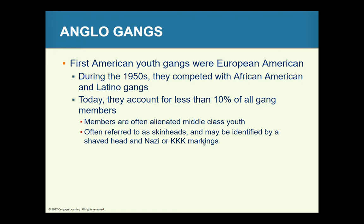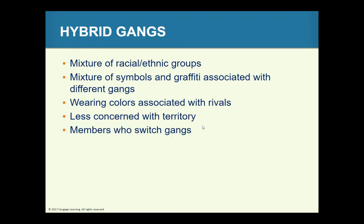Anglo gangs include the Punkers, Stoners, and Skinheads. These first youth gangs were European Americans during the 1950s, competing with African American and Latino gangs. Today they account for only about 10% of all gang members. Hybrid gangs are a mix of racial and ethnic groups, with a mixture of symbols and graffiti and members wearing colors associated with rival gangs.